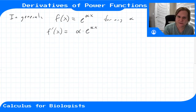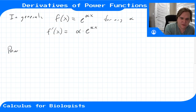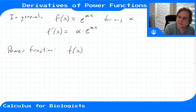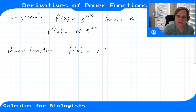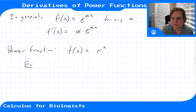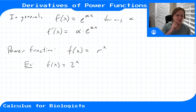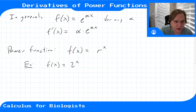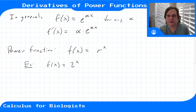That brings us to the power function. Recall that a power function is anything of the form r^x, where you have some base number r raised to the x power. An example would be f(x) = 2^x — x is the variable but it's inside the exponent of another number. So how do we compute these derivatives?